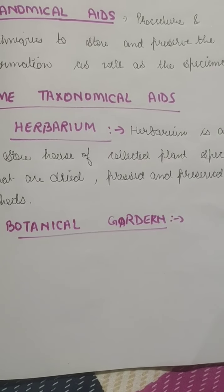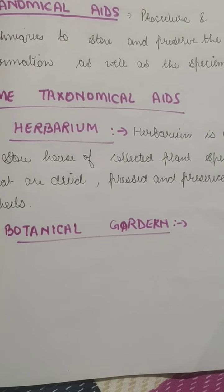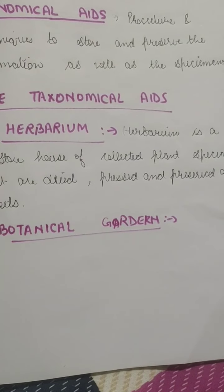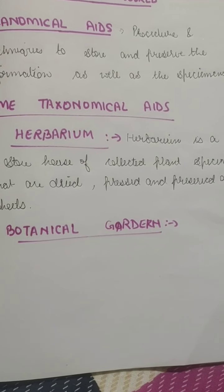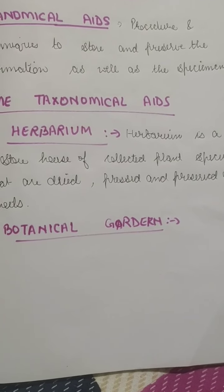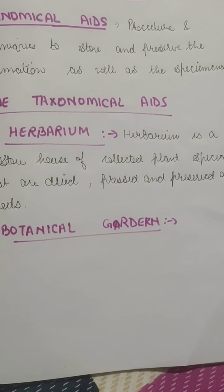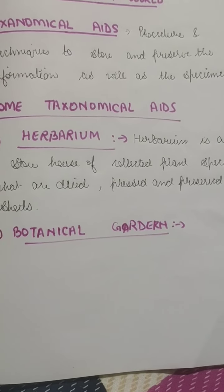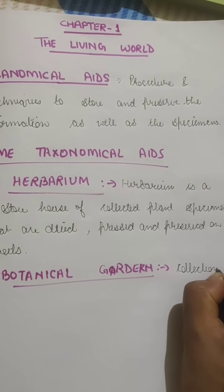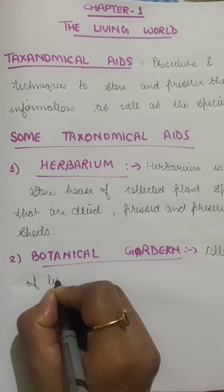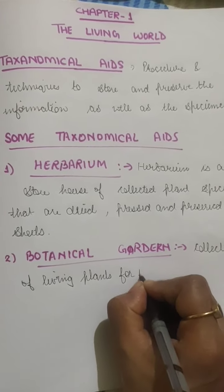The famous botanical gardens in India include the Indian Botanical Garden, Howrah, at the National Botanical Research Institute in Lucknow. The main idea of these gardens is to keep plants for reference and to learn how they grow in certain environments. If new plants are found, they are also kept there so scientists can study them. This is essentially a collection of living plants for reference.